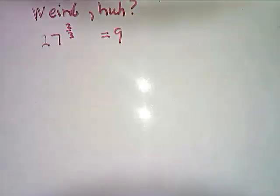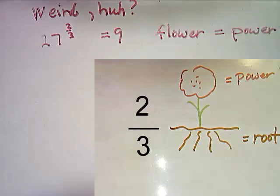Weird, huh? 27 to the 2 thirds power ends up as 9. Here's something to help you remember. The flower is the power and the root is the root.